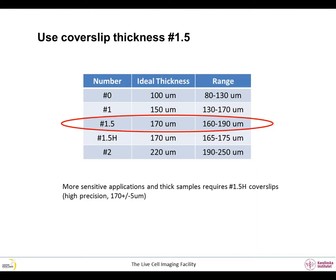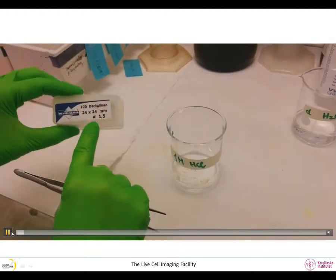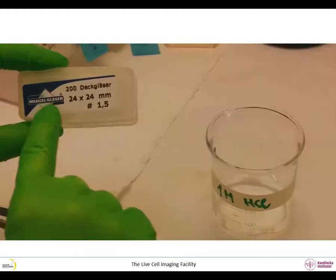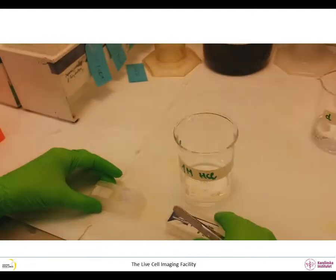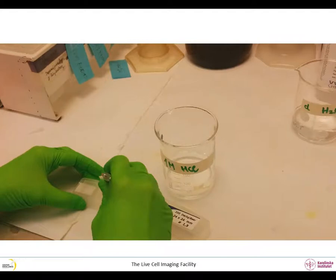Objectives are designed to be used with cover slips with a thickness of 170 micrometers and with the sample directly on the cover slip. Buy cover slips labeled as number 1.5. They have a thickness between 160 to 190 micrometers. Please pay attention so that you pick cover slips from a box having number 1.5 written on it. Using the wrong one may have serious implications for your imaging.